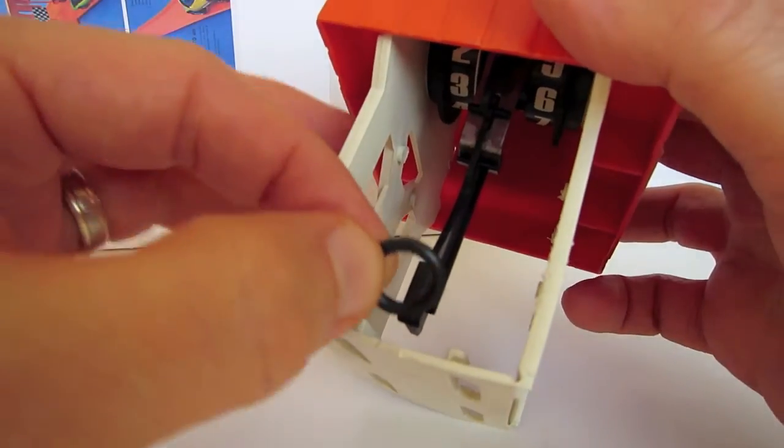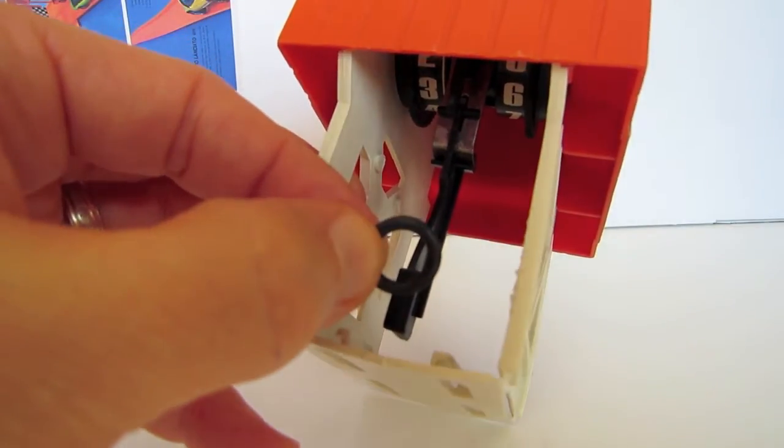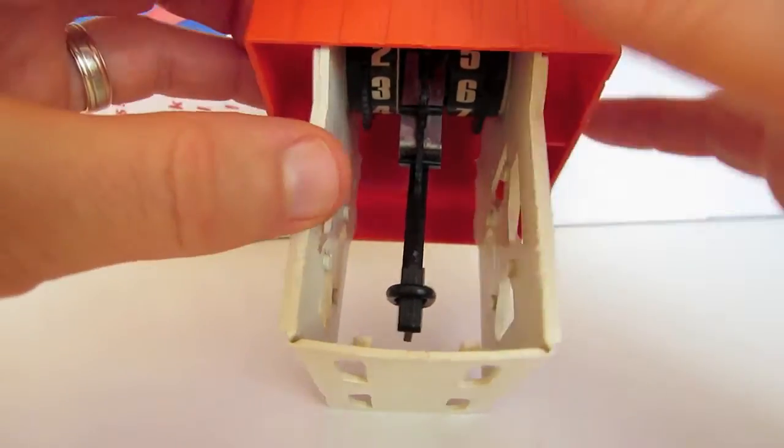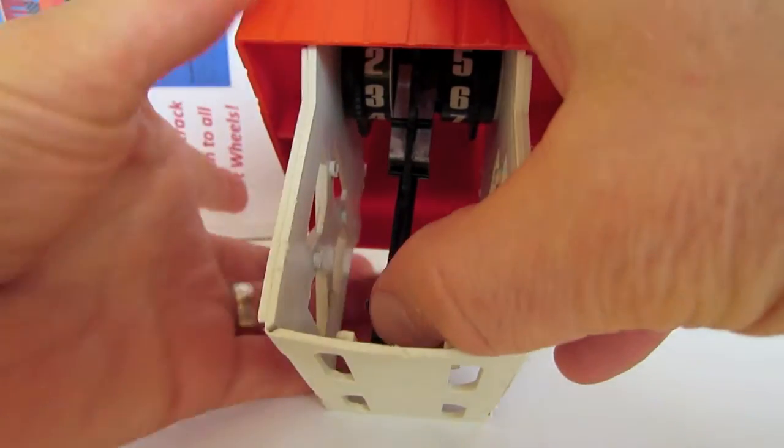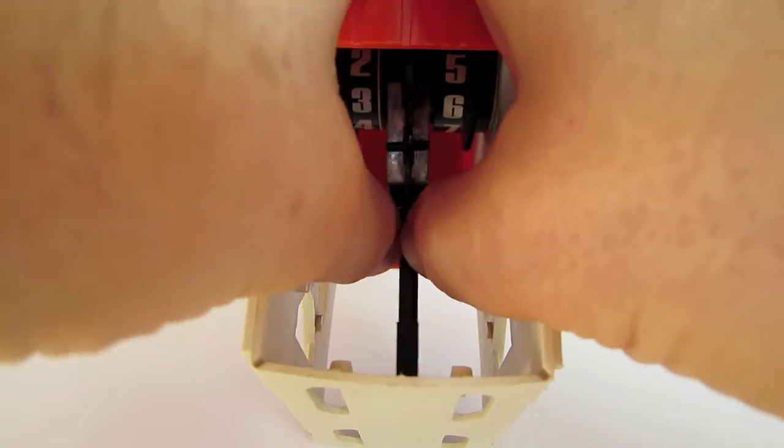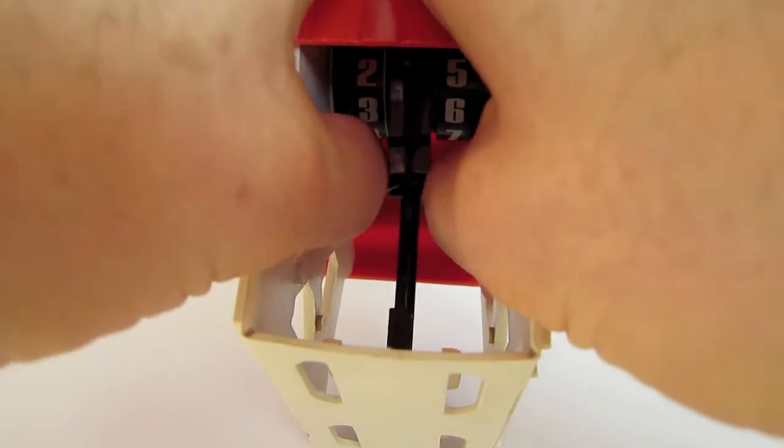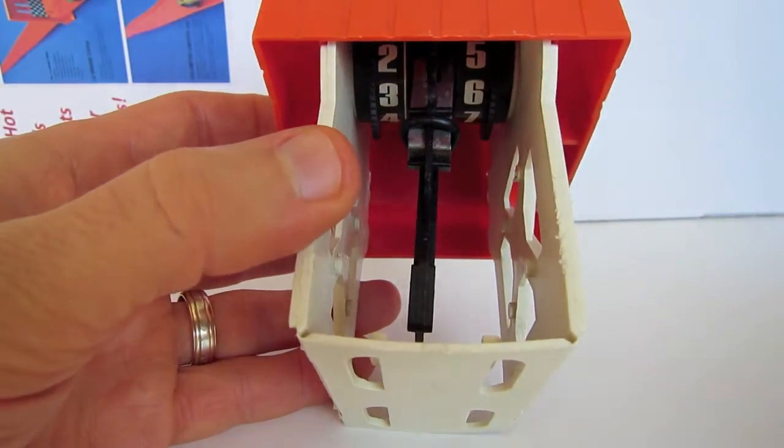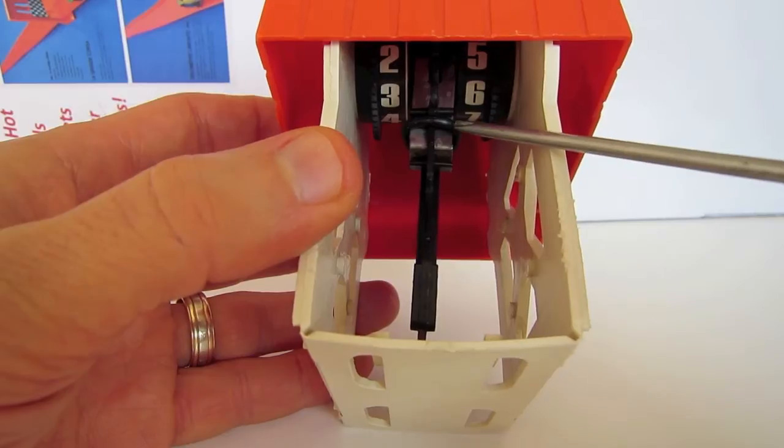Take your automatic lap counter and slide the o-ring over the swing arm. From the base of the swing arm, take it all the way up to the little plastic retainer. Slide it into place here.